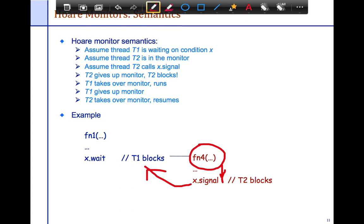What happens next is what separates out the semantics of the two types of monitors. In this one, we're going to look at the Hoare semantics, where T2 gives up the monitor. This is T2. This is T1. So T2 gives up the monitor. So T1 starts running. It finishes what it needs to do, and then finally releases the lock.